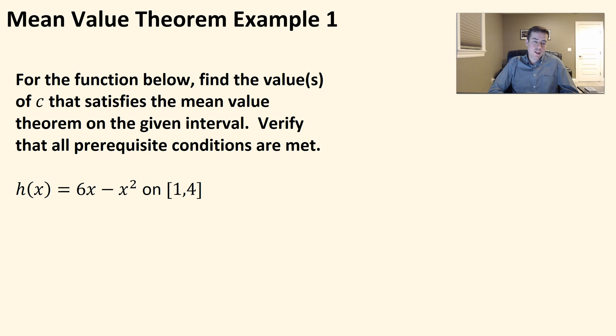So here we have our function h(x) = 6x - x² on the interval from x = 1 to x = 4.